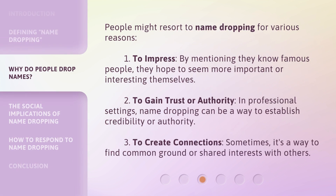People might resort to name-dropping for various reasons. One: to impress — by mentioning they know famous people, they hope to seem more important or interesting themselves. Two: to gain trust or authority — in professional settings, name-dropping can be a way to establish credibility or authority. Three: to create connections — sometimes it's a way to find common ground or shared interests with others.